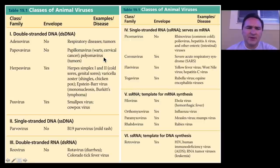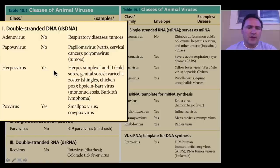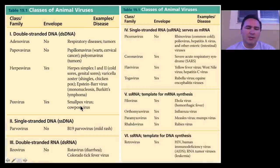In these two tables here, you can see, for example, viruses can be both double-stranded DNA. For example, here we have viruses like papivirus, which causes warts and cervical cancers, or the herpes viruses, which cause cold sores and genital sores, and even shingles and chicken pox. Pox viruses, which cause smallpox.